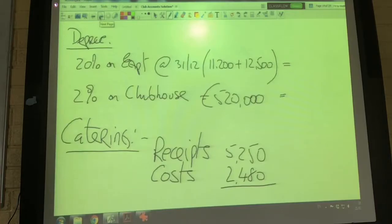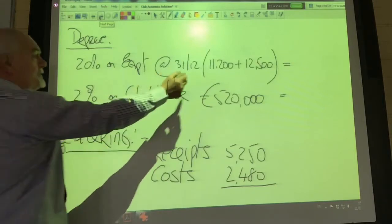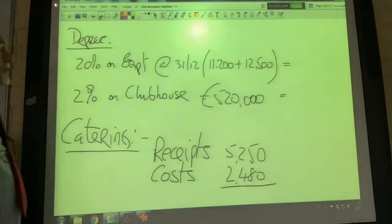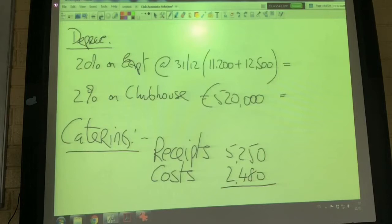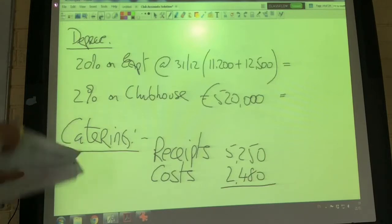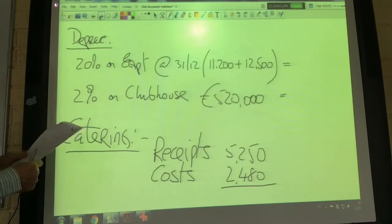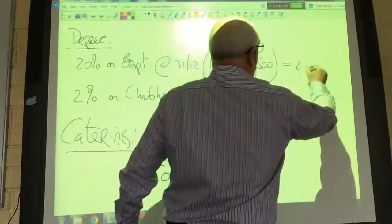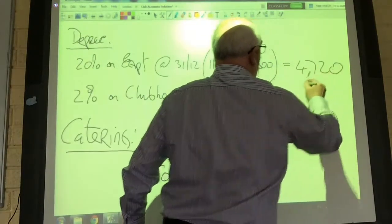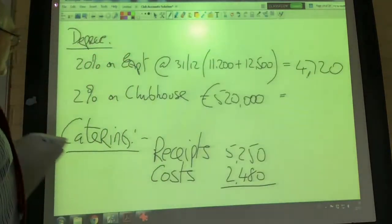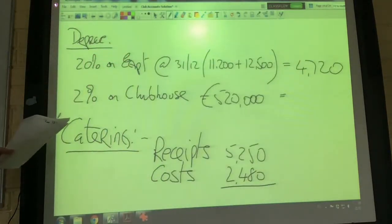The question tells us to depreciate the equipment at the end of the year on December 31st by 20%. We started with 11,200 worth of equipment and bought a further 12,500. So we want one-fifth of 11,200 plus 12,500. We're going to charge 4,720 to our income and expenditure account for equipment depreciation.